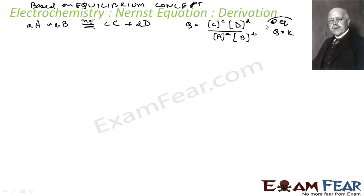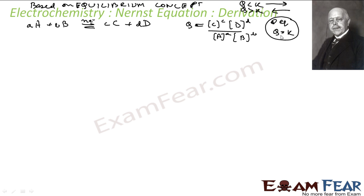K is nothing but the value of Q at equilibrium. If Q is less than K, the reaction will move in the forward direction. If Q is greater than K, the reaction will move in the backward direction. Q is concentration of products by concentration of reactants at any given point of time, and at equilibrium that same value of Q becomes K.